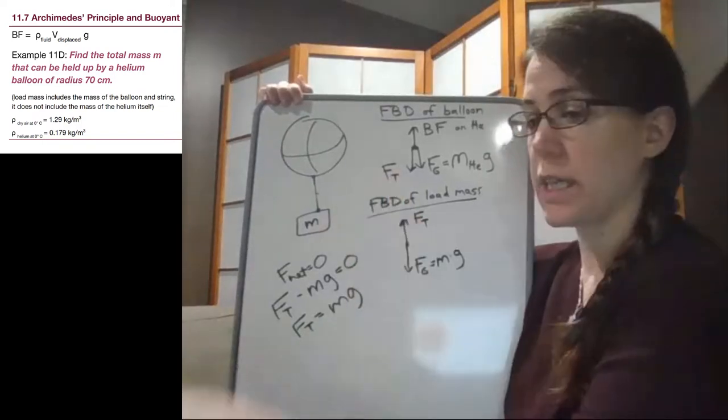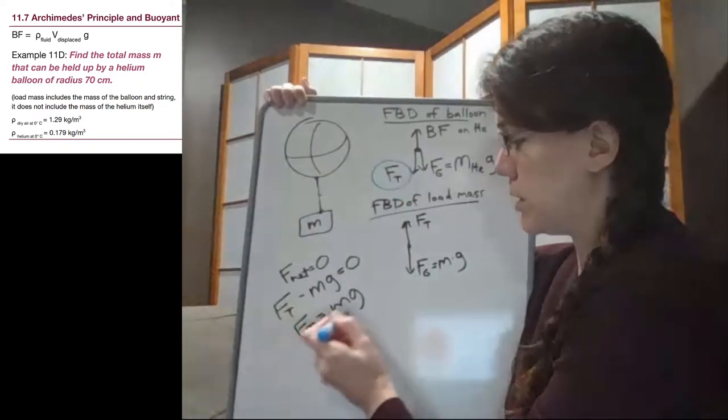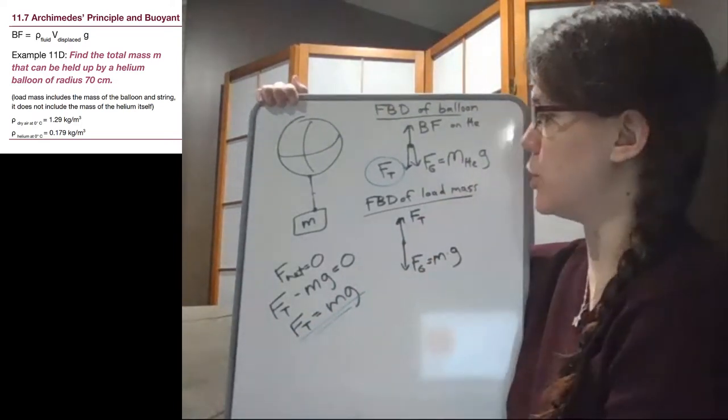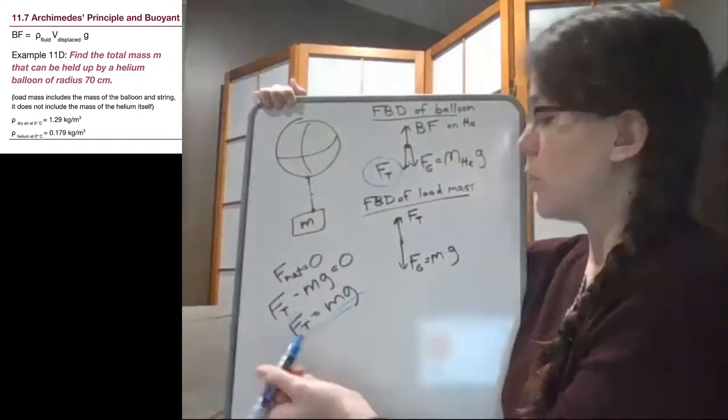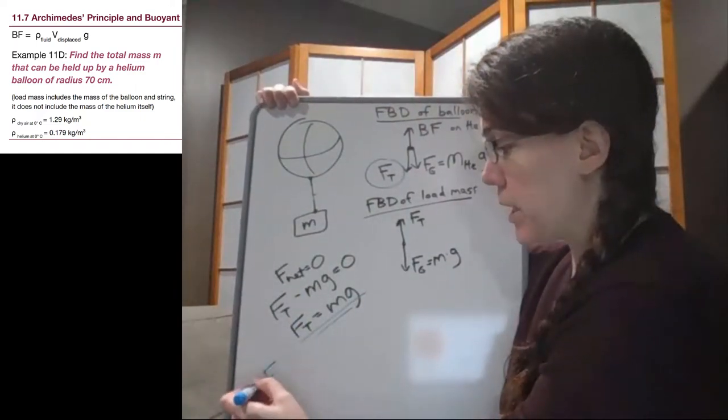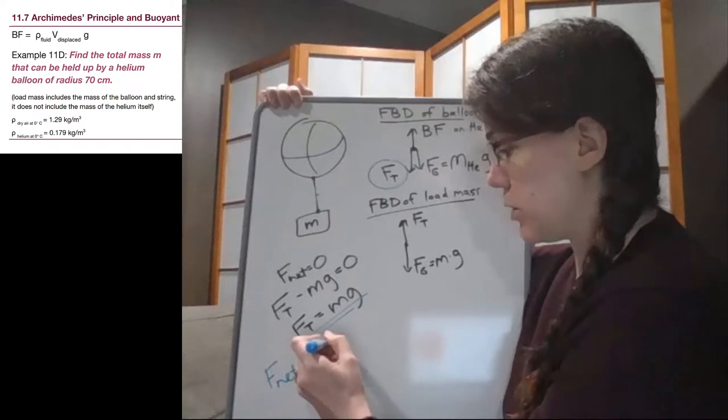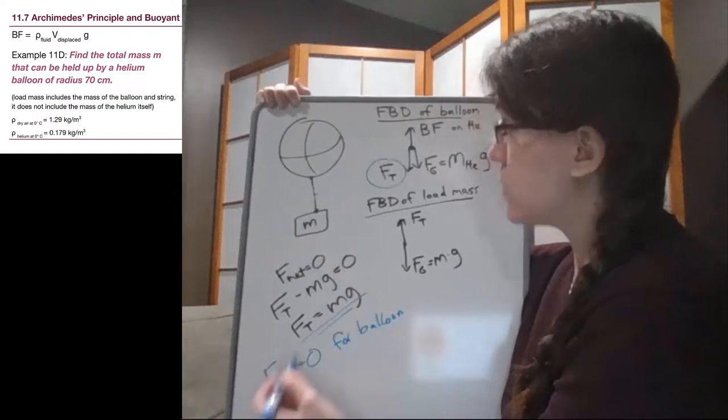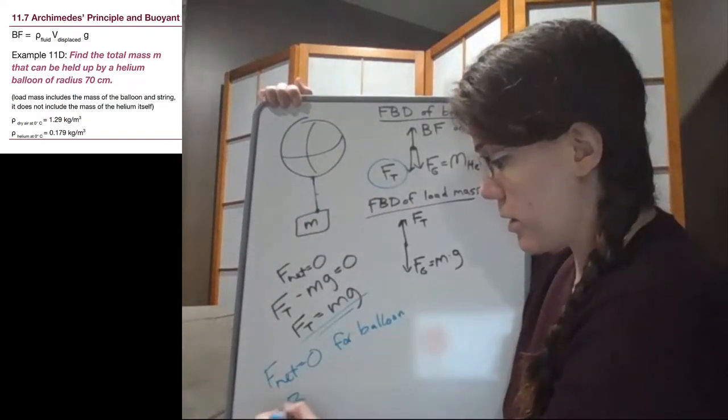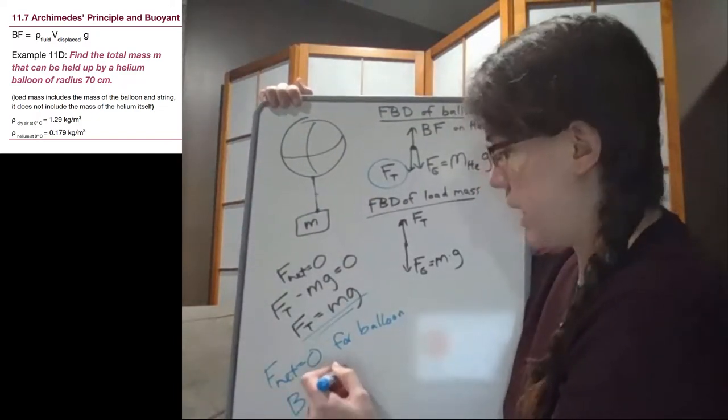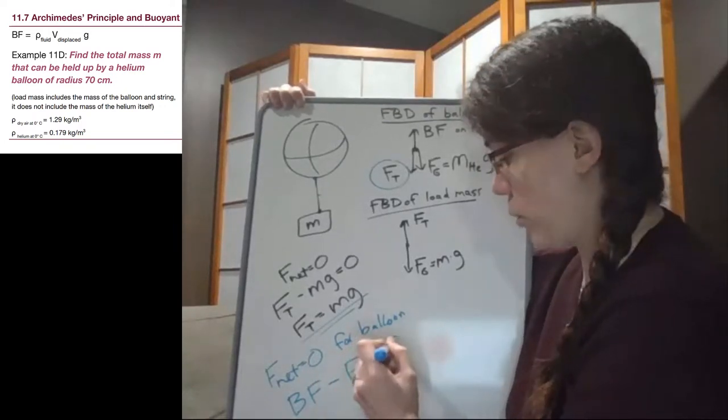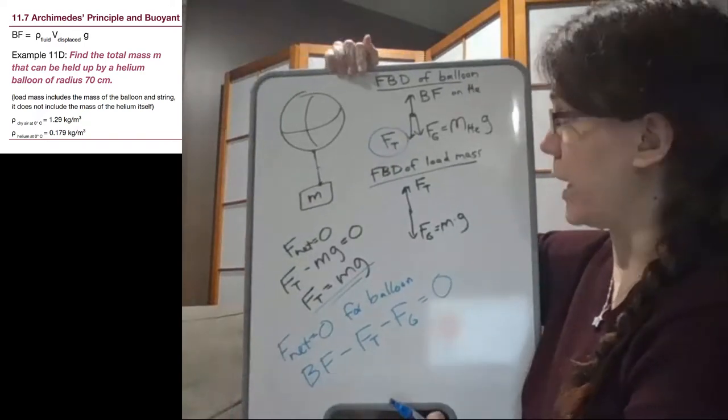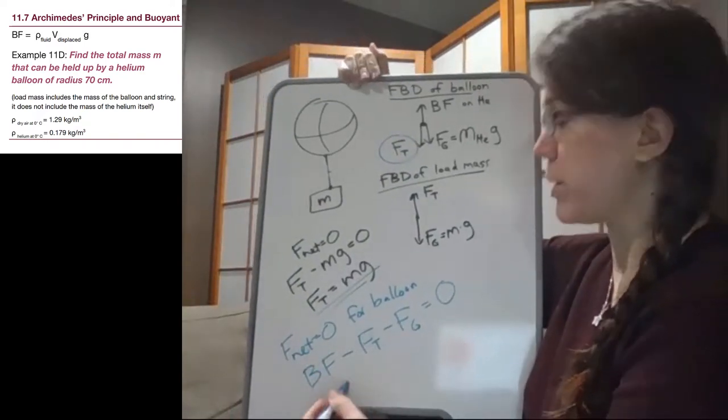So that means that if the tension is equal to gravity here, then we know that this tension is equal to the load mass, which is different than the helium mass, times g. So in the free body diagram of the balloon, the net force is also zero for the balloon, and so we have the buoyant force up minus the tension minus the weight of gravity of the balloon, and that equals zero.